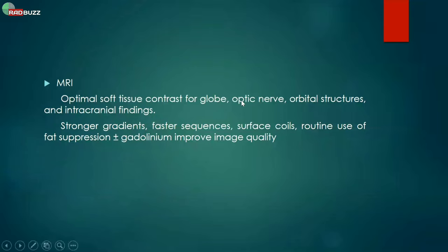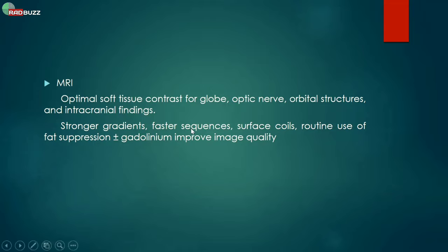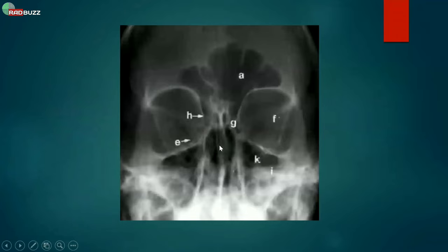MRI is for soft tissue — the globe, optic nerve, orbital structures, and intraocular findings. We should do targeted orbital imaging. I've come across many scans that are out of protocol and don't target the orbits. We should use fast sequences, stronger gradients, and fat suppression with gadolinium to improve image quality.